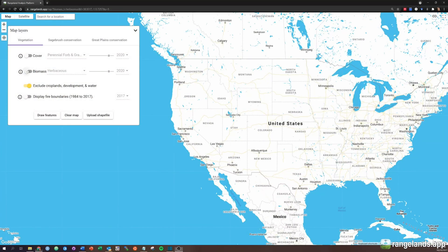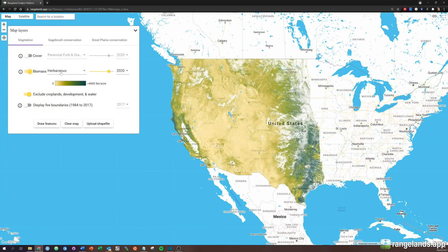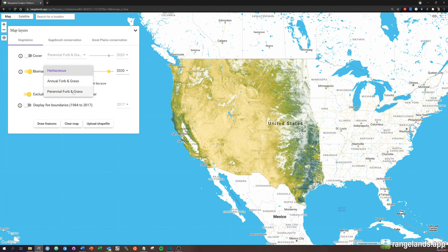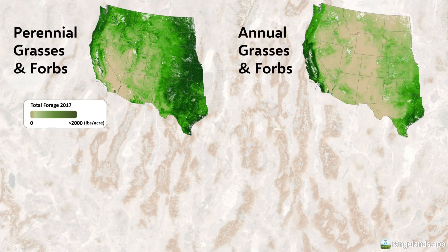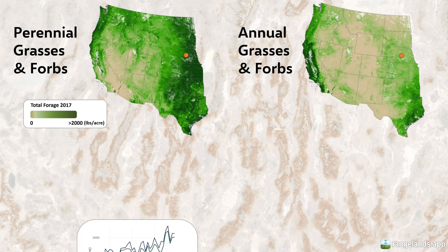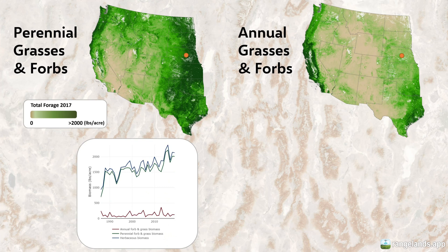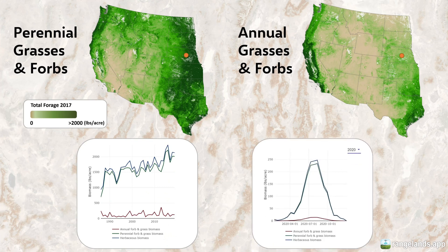When you view the rangeland production dataset on rangelands.app, you'll see two primary datasets: one for perennial herbaceous plants and the other for annual herbaceous plants. For any given location — I've chosen a point here in central Nebraska — you can view those data on an annual basis and as a nearly continuous 16-day estimate.